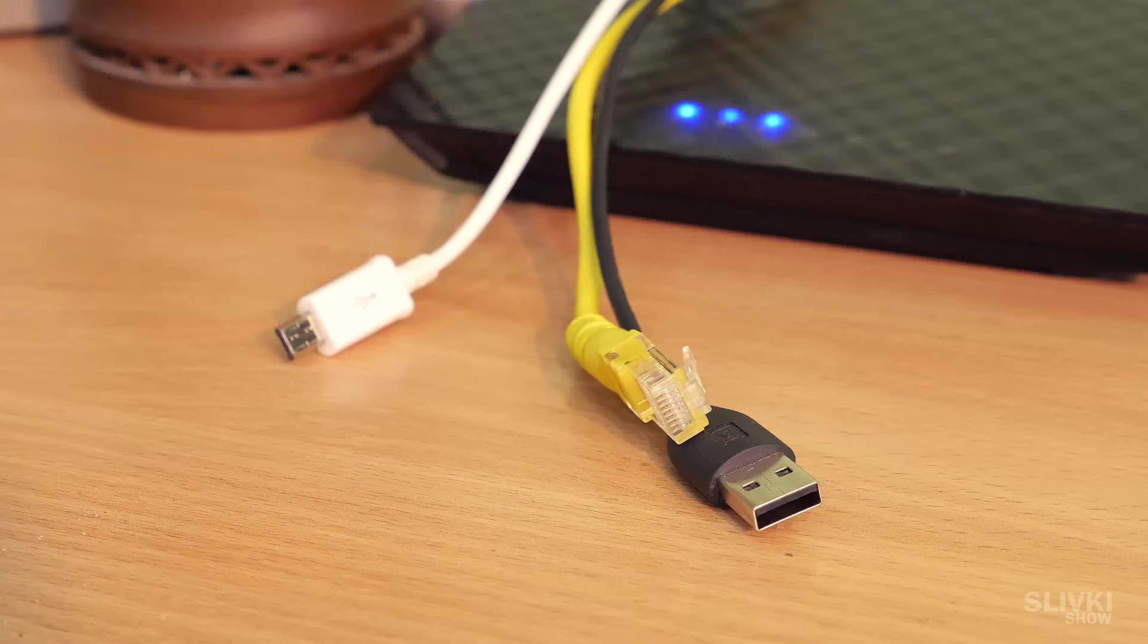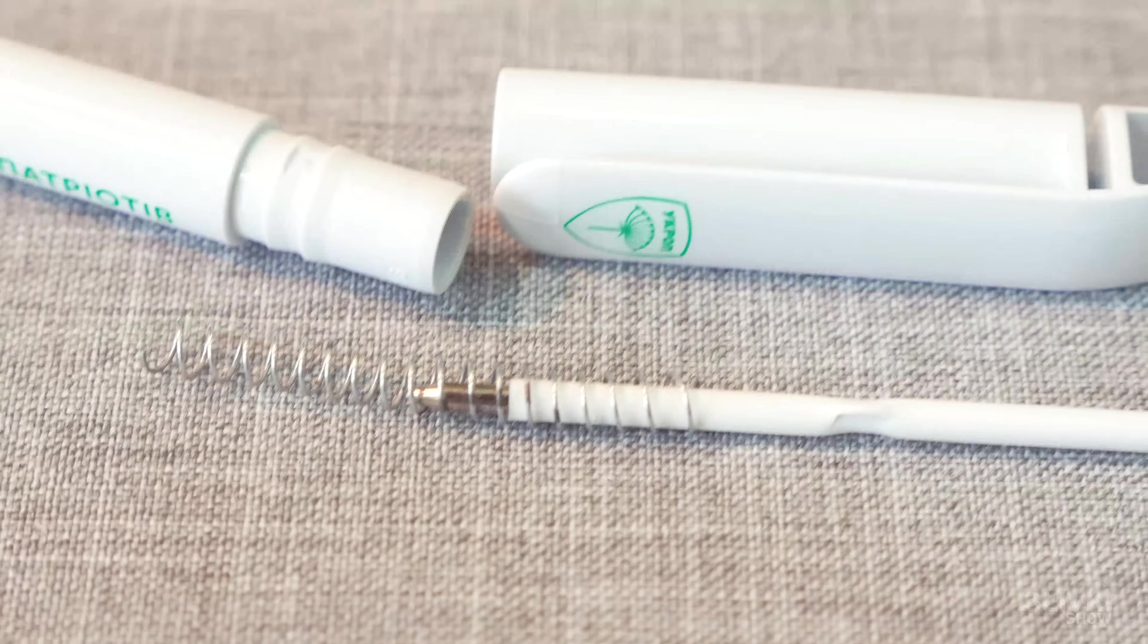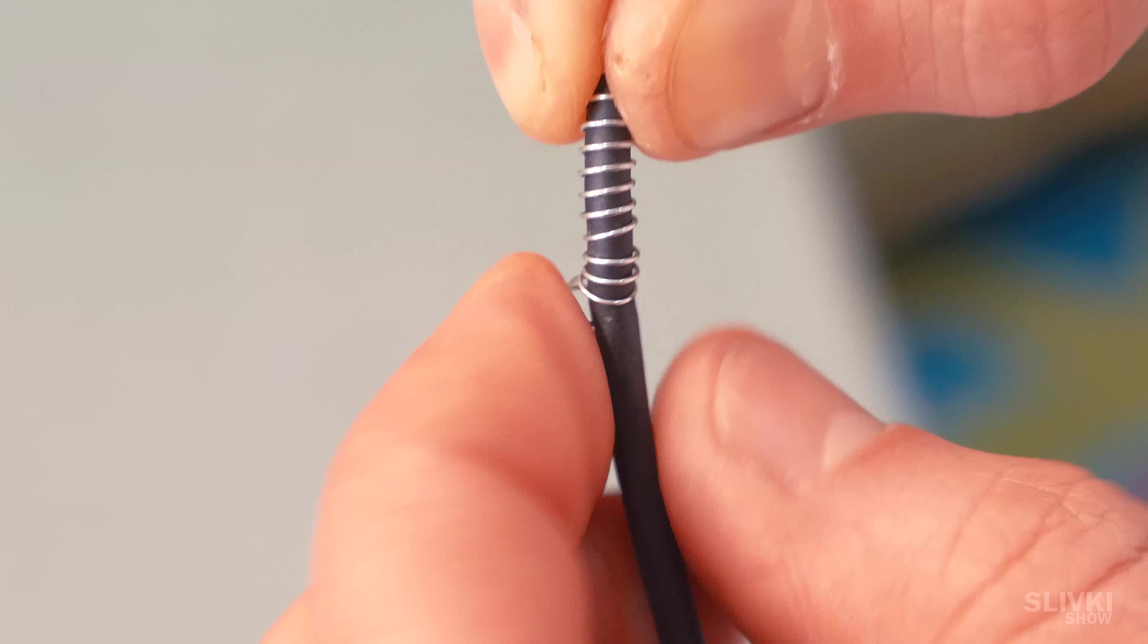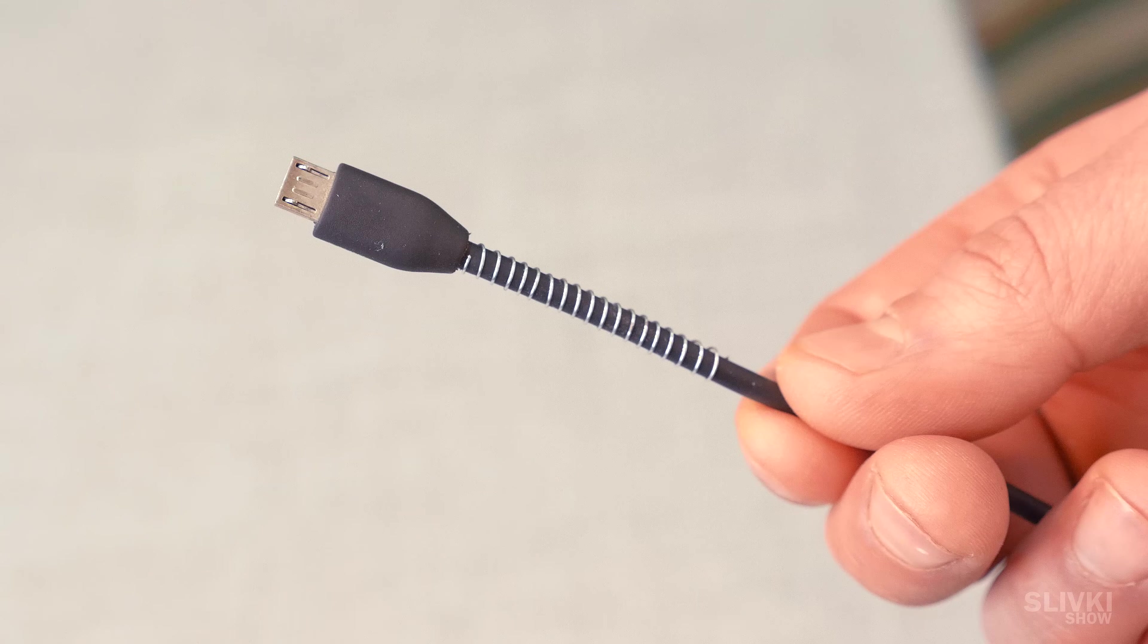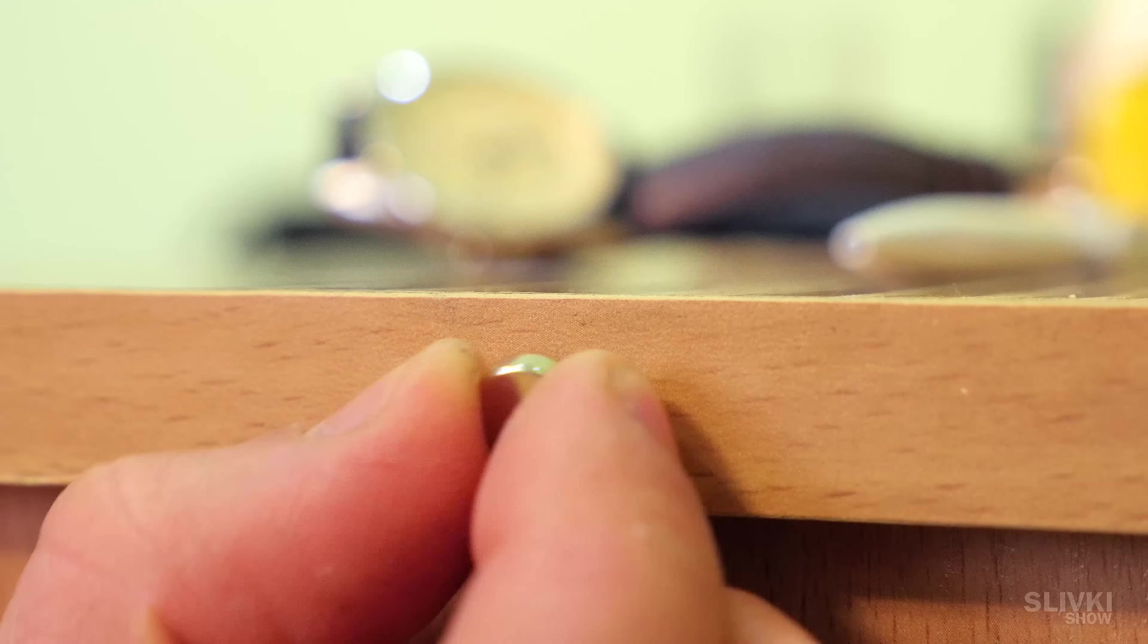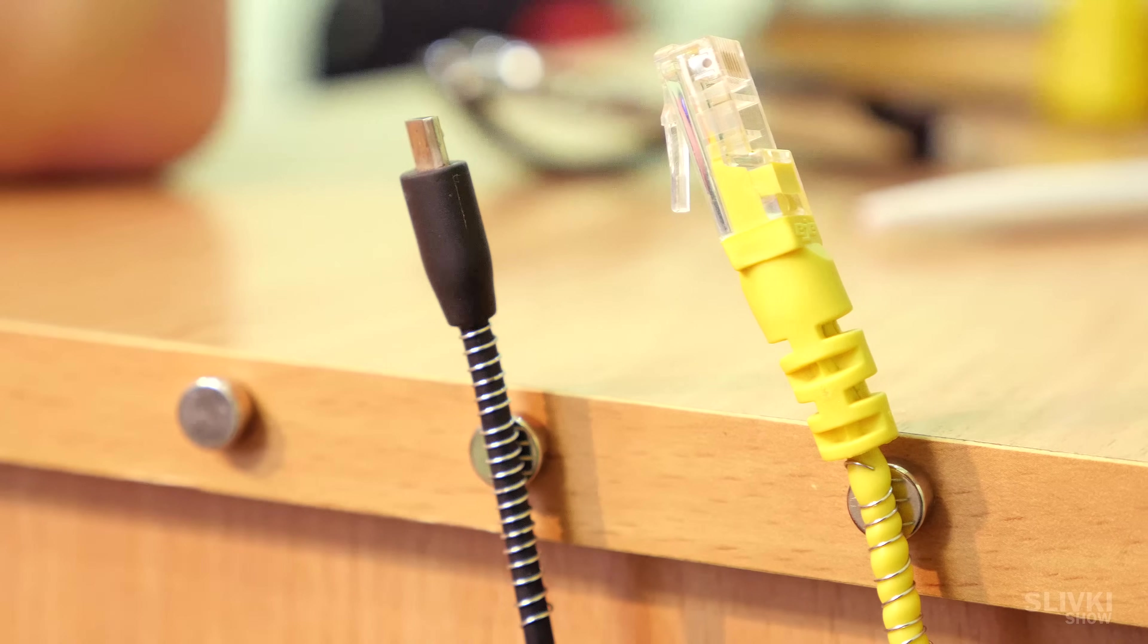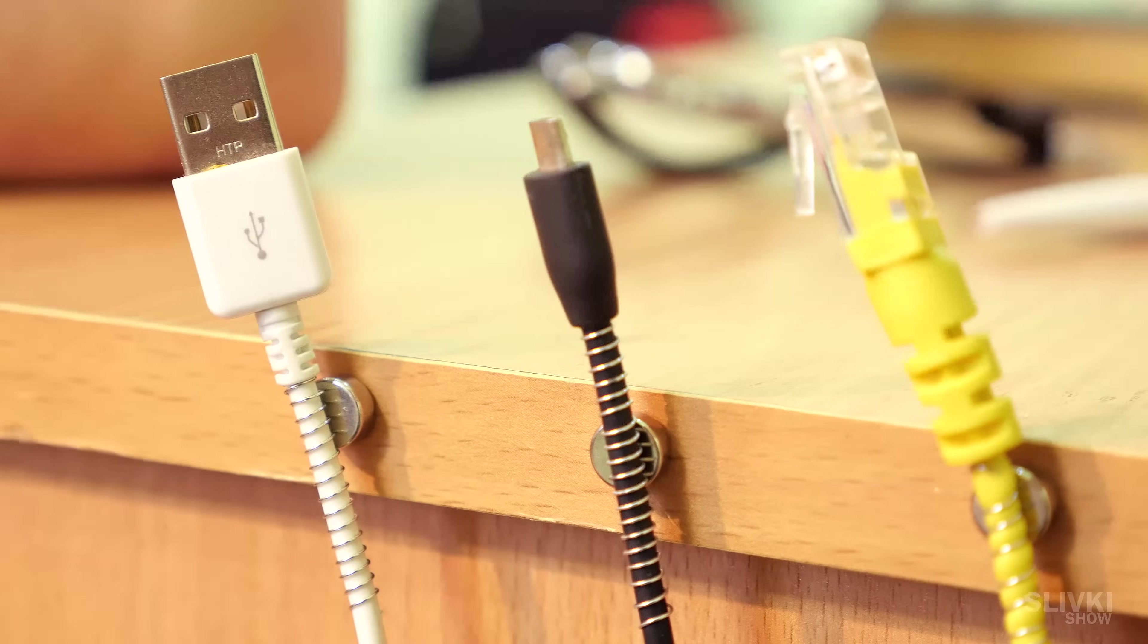Do you want to organize wires on your desk? You will need a spring from a pen, which should be wound around the base of a cable. Then, using hot melt adhesive, glue a small magnet to the table. You will get a very convenient way to hold the wires in your workspace.